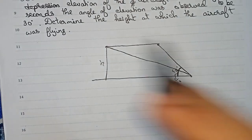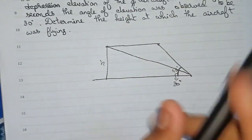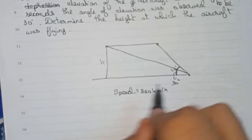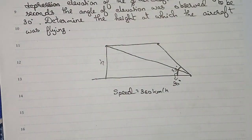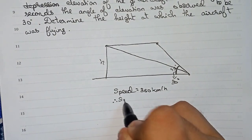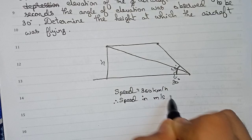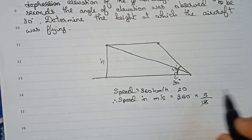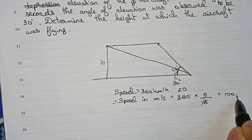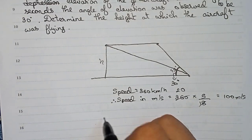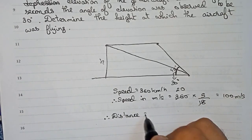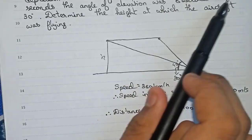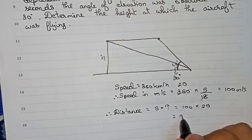It is also given that the speed of the aircraft is 360 km per hour. We need to convert this into meters per second using the formula: 360 × 5/18 = 100 meters per second. Therefore, distance equals speed into time: 100 × 20 seconds = 2000 meters.